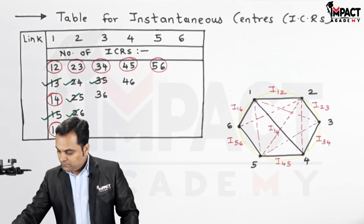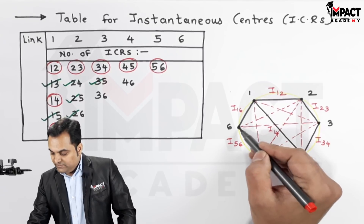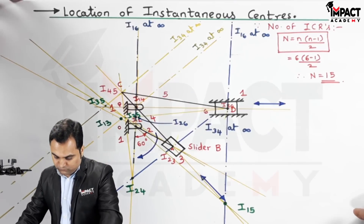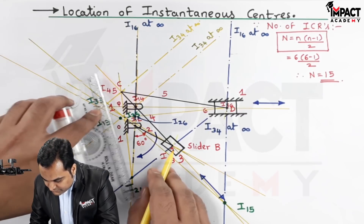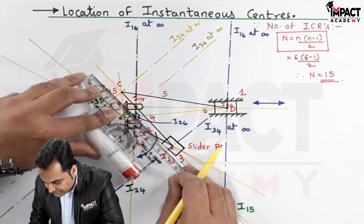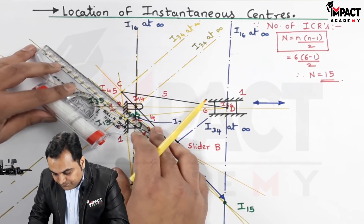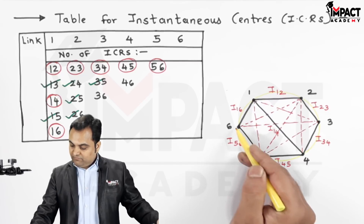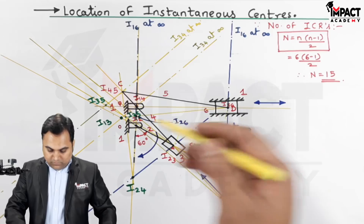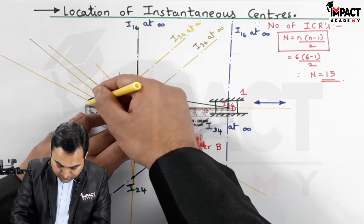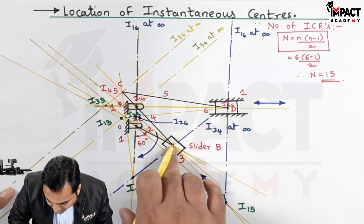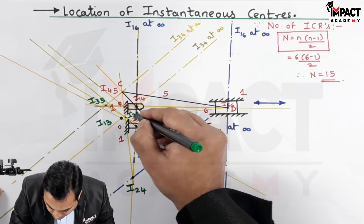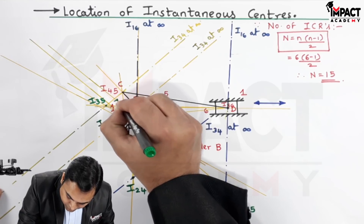For I36, we use triangles 1-3-6 and 2-3-6. Taking triangle 2-3-6: we join I26 and I23. Then for the other set, joining I35 and I56 with a light line. Where I26-I23 and I35-I56 intersect gives us I36.